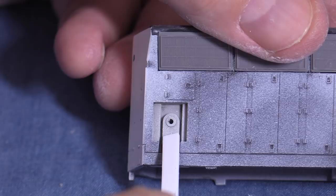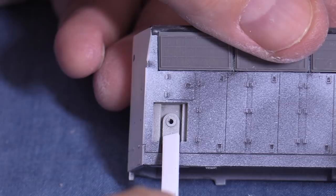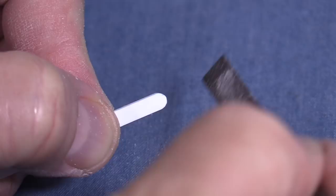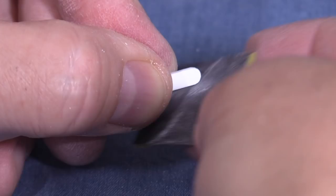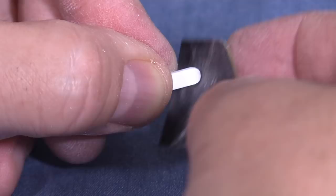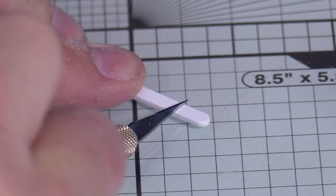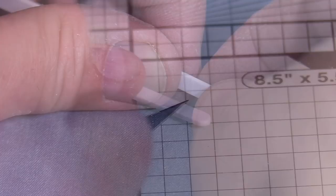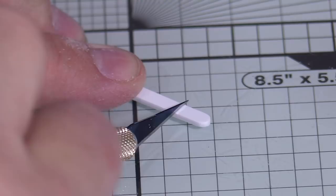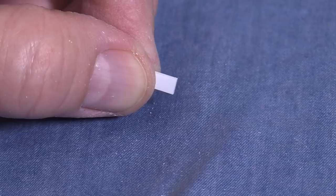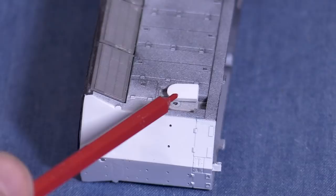Next I'll use a file to round off one end. I'm trying to match the curvature on the Proto 2000 part. Much of this will end up behind the brake wheel anyway, so if it's slightly off chances are no one will notice, but I'd still like it to look as good as possible. Once I'm satisfied with the shape I can cut the piece to length, again using the Proto 2000 part as a guide. My piece ended up slightly too long, so I'll cut it down to its final size with a file.